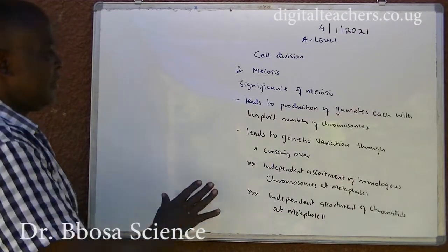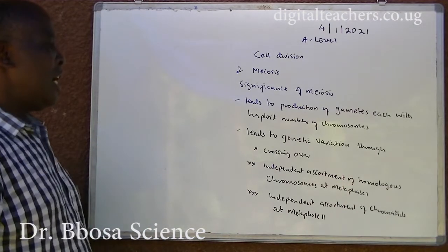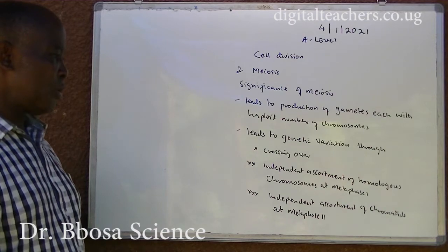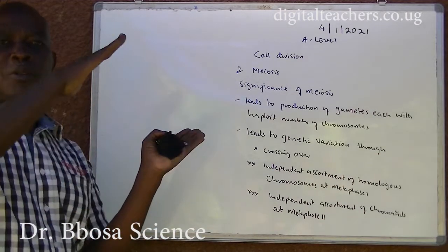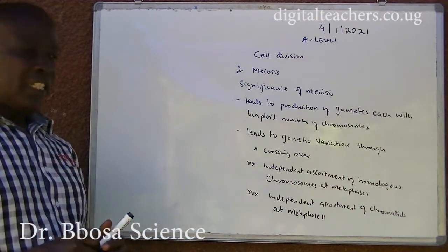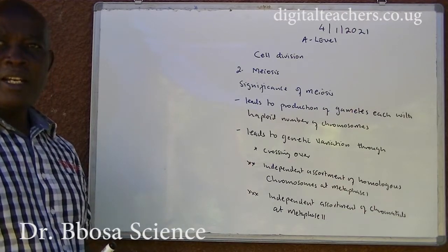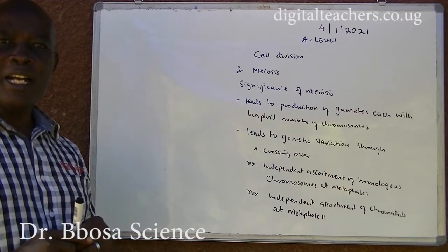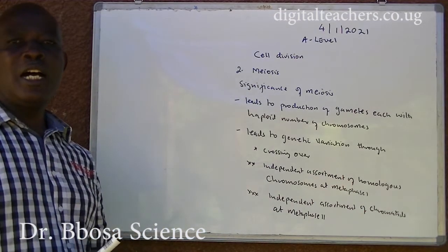Significance of meiosis: one, it leads to the production of gametes, each with a haploid number of chromosomes. Two, it leads to genetic variation through crossing over, independent assortment of homologous chromosomes at metaphase I — where homologous chromosomes arrange randomly — and independent assortment of chromatids in metaphase II, since the chromatids from prophase I crossing over are no longer identical.